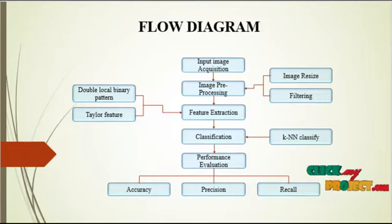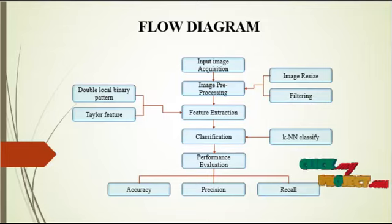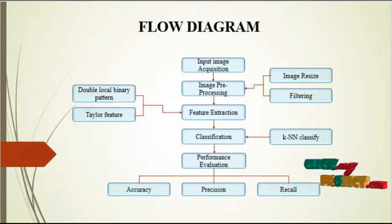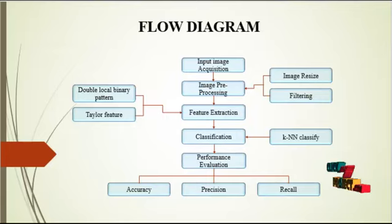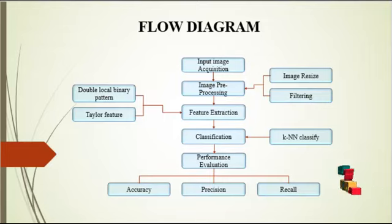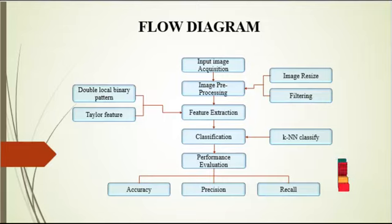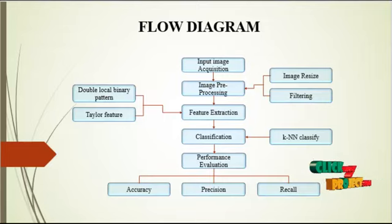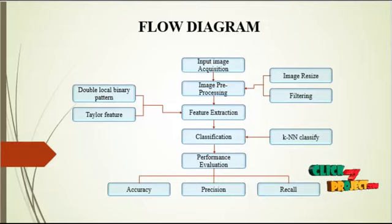After taking the input image, we perform image pre-processing operations. Pre-processing refers to the preliminary steps for image processing. In that, we resize the image and filter the image. Image resize means we resize all images to equal dimensions in the dataset, because the images are of different dimensions. We resize images to 256x256 size dimensions. For the filtering process, we perform median filtering on the image.